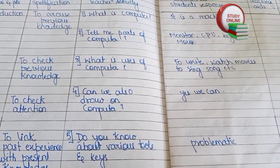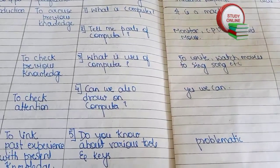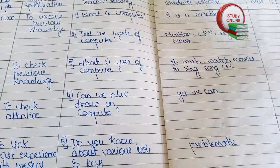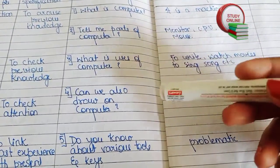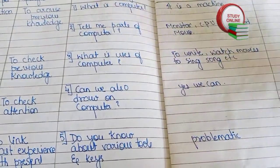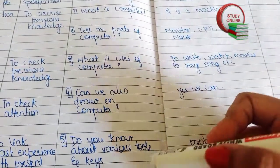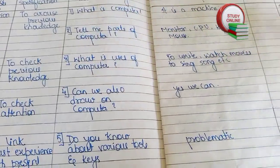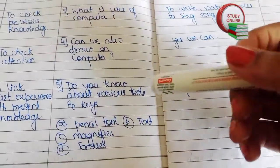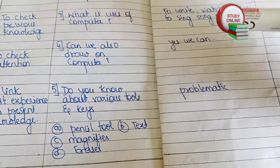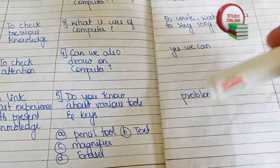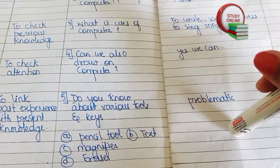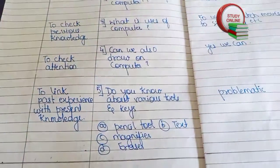The student will answer that it is a machine. Then we ask 'Tell me the parts of a computer,' and they will answer. Next: 'What are the uses of a computer?' — students will try to answer in their own words. Then: 'Can we draw on a computer?' — students answer yes. The last question: 'Do you know about various tools and keys like pencil tool, text, magnifier, and eraser?' — this would be challenging for students.